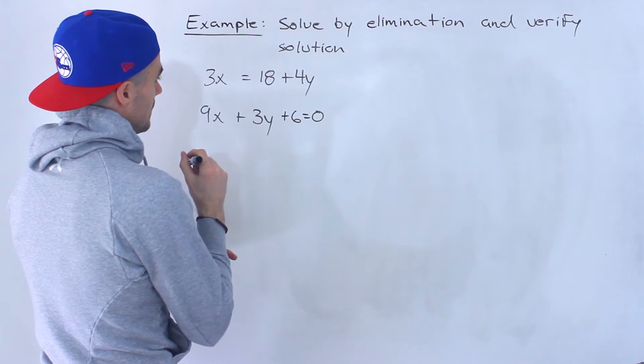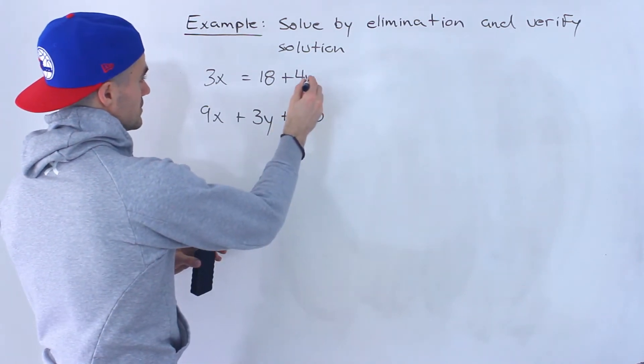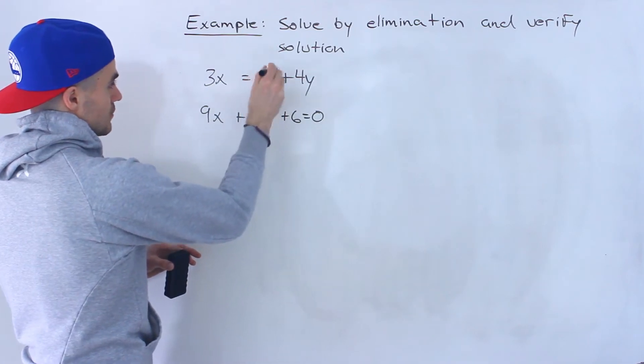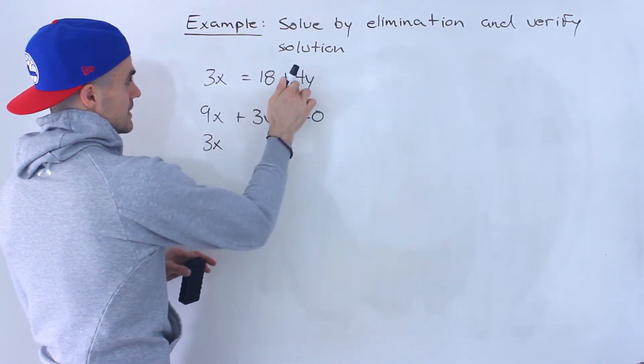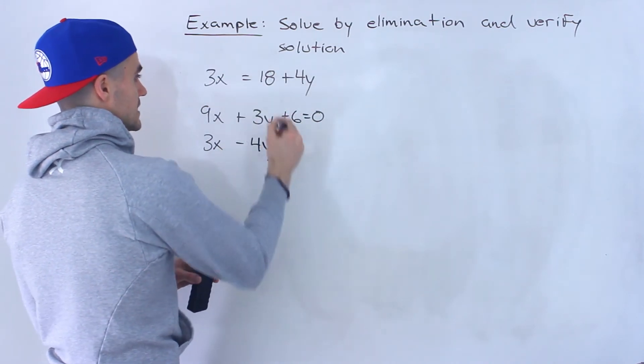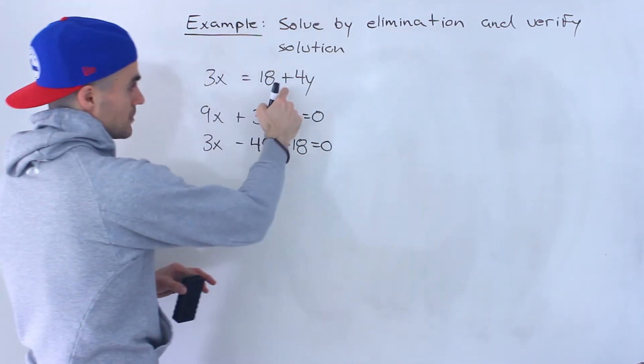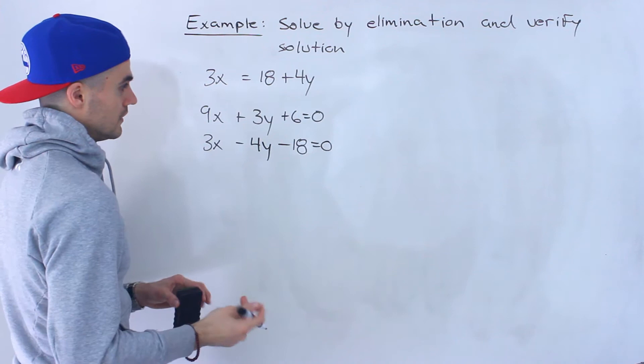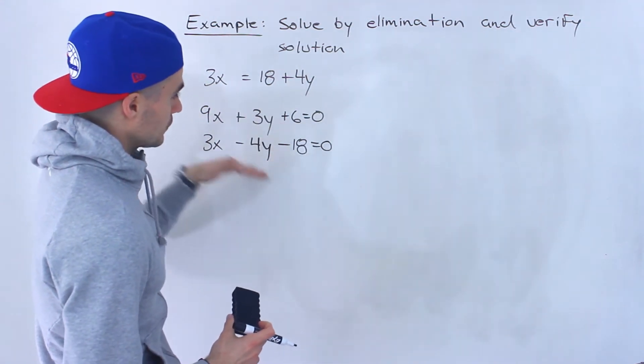The way I'm going to do that, I'll just bring everything to the left side for this line. So for this line here, 3x stays as is. This 4y I'm going to bring over, so I'll be minus 4y, and the 18 I'm going to bring over. That would be minus 18. And that's going to equal zero. So now notice everything is lined up properly.